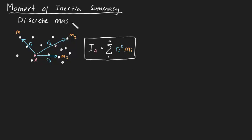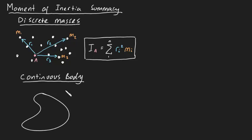But this is for a set of discrete masses. For a continuous body, like a metal plate, the moment of inertia about A can be proven to become iA is equal to the integral of r squared dm.